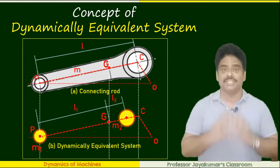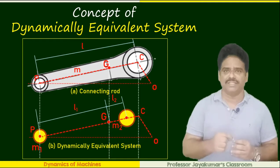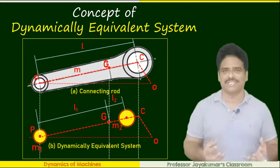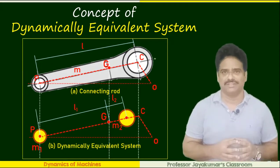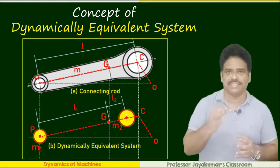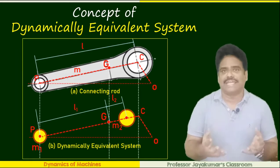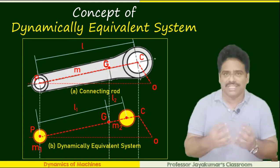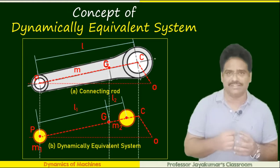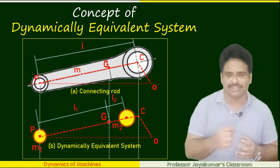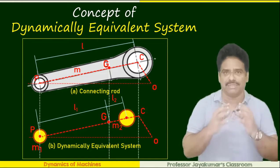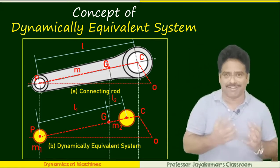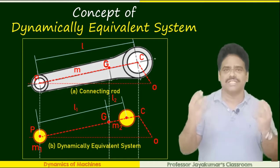In dynamics problems, it is convenient to replace the given distributed non-uniform rigid body by two separate concentrated masses placed at a distance apart. In dynamics force analysis, determining the inertia force of the connecting rod is not that easy. After all, the connecting rod has distributed mass and the motion is not uniform. Therefore, we need some theoretical concept to determine the inertia or torque acting on the connecting rod. That concept is what is known as the dynamically equivalent system, in which we replace the distributed mass connecting rod by two concentrated masses.